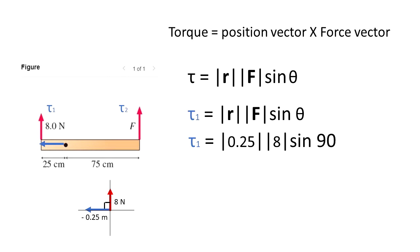If we apply the definition, we have that 0.25 meters times 8 newtons multiplied by the sine of 90, which is equal to 1. This is equal to 2 Newton meters clockwise.